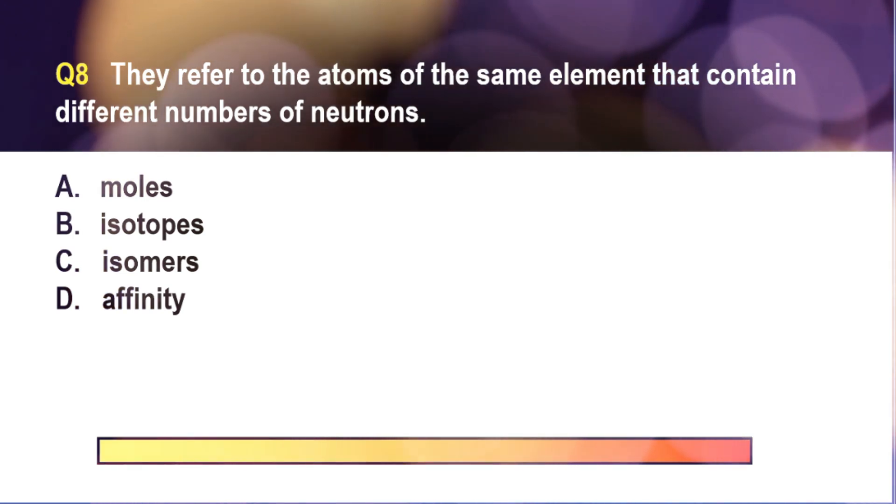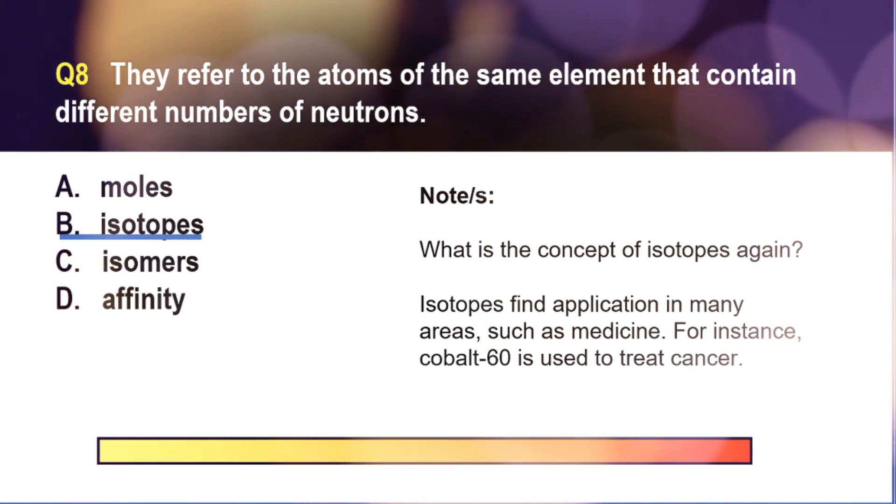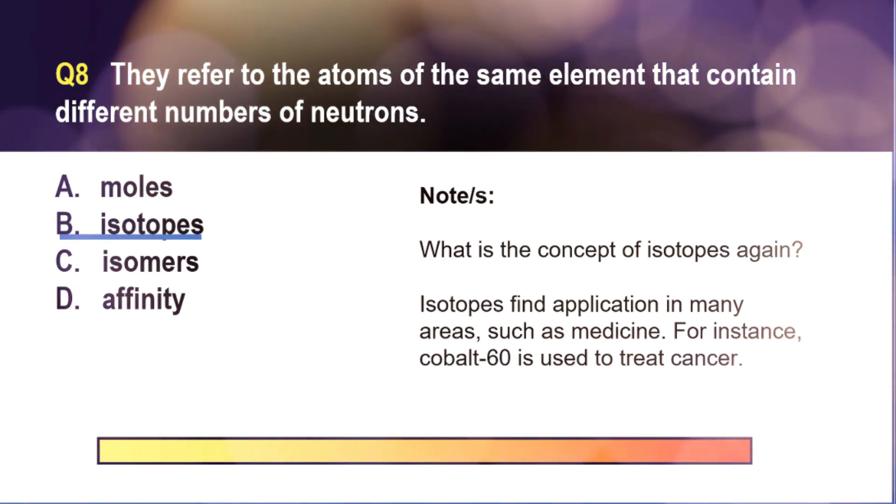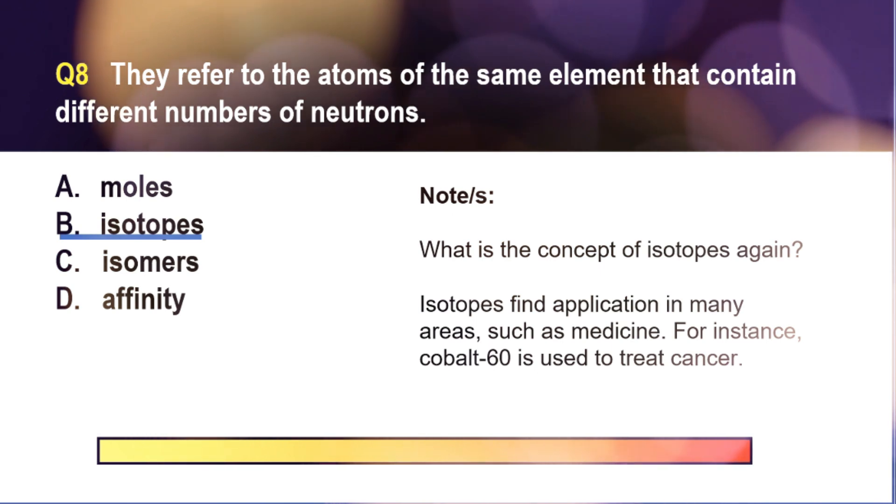The correct answer is letter B. I think I've mentioned this in the previous items, so you just build on that knowledge if you have been following our discussion. And just additional knowledge, all elements have isotopes, either naturally occurring or artificial.